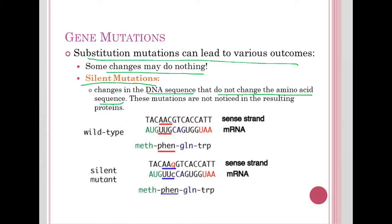This is a result of the redundant genetic code, where multiple codons can code for the same amino acid. The actual codon has changed, but the amino acid stays the same.